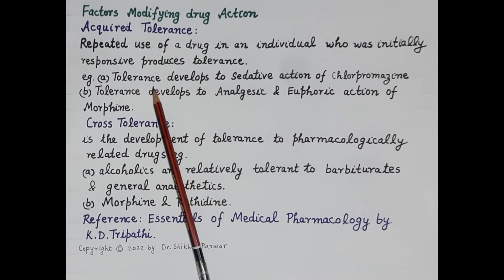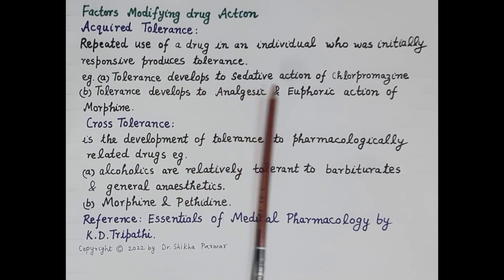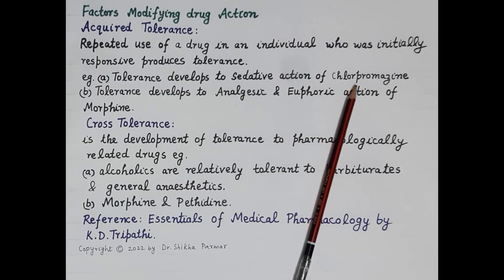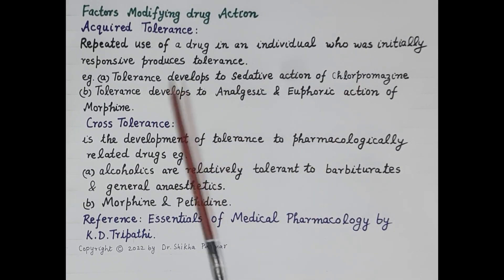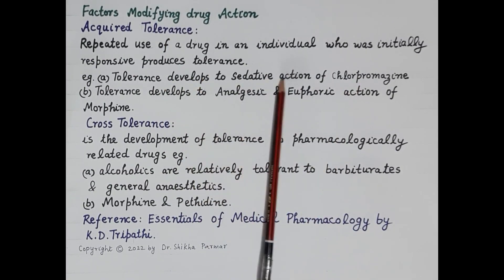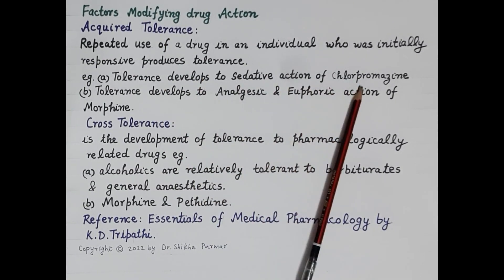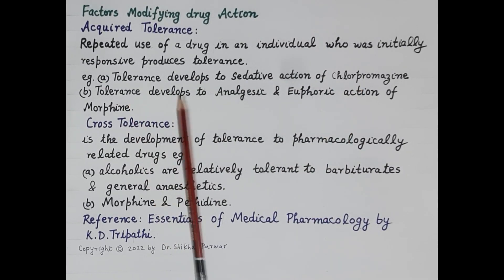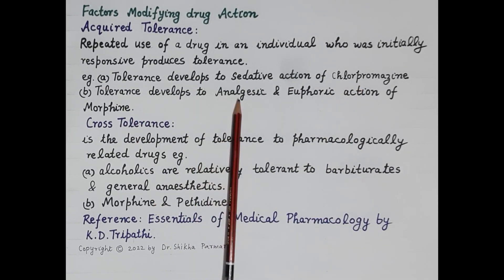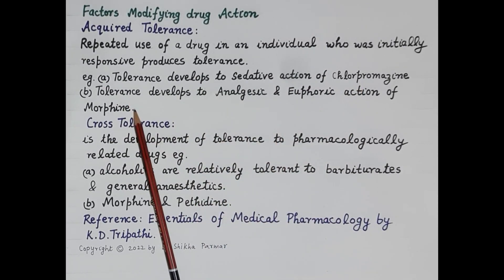For example, tolerance develops to the sedative action of chlorpromazine when it is taken repeatedly over a long period of time. Similarly, tolerance develops to the analgesic and euphoric action of morphine with repeated use.